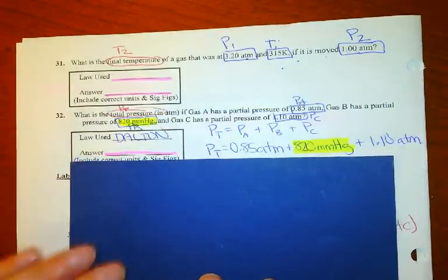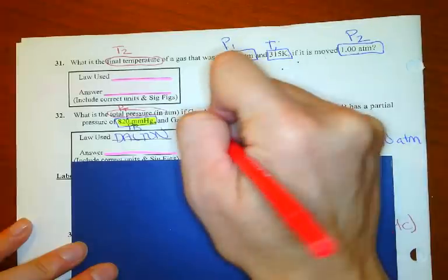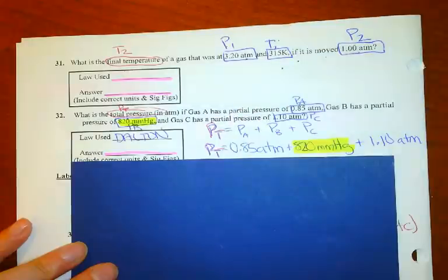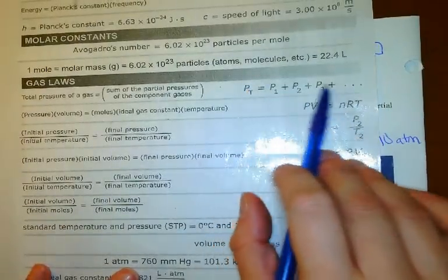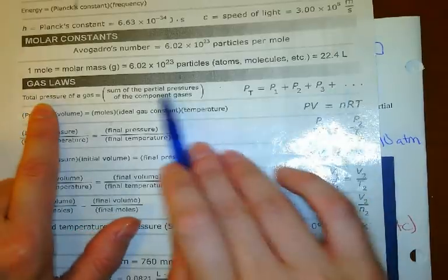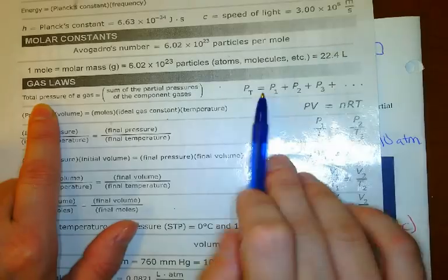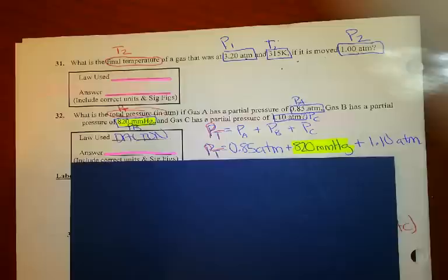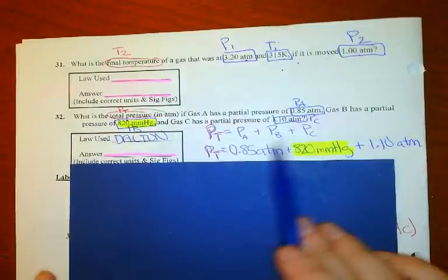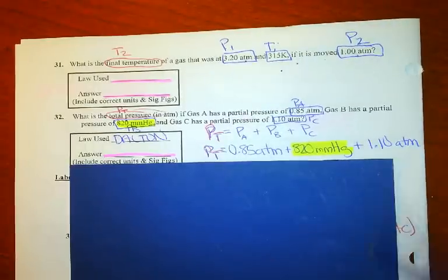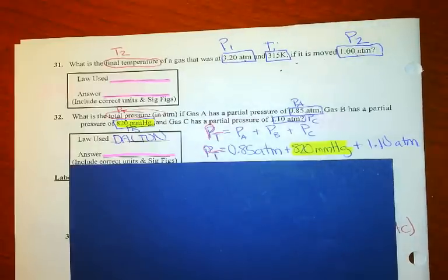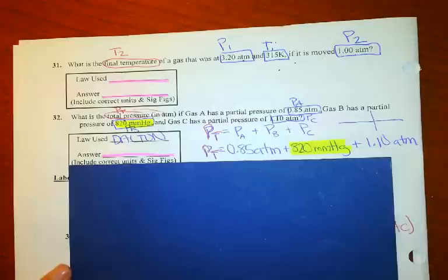Problem 32 is a Dalton's Law question asking for total pressure — find PT. Gas A has a partial pressure of this, gas B here, gas C there. They gave us atmospheres and mmHg, all pressures, and used the phrases 'total pressure' and 'partial pressure,' so we use PT = PA + PB + PC. If you just add those three numbers you get the wrong answer — this is like adding dollars, pesos, and dollars. You have to convert millimeters of mercury to atmospheres before you can add them, like we did at the top of the last page.